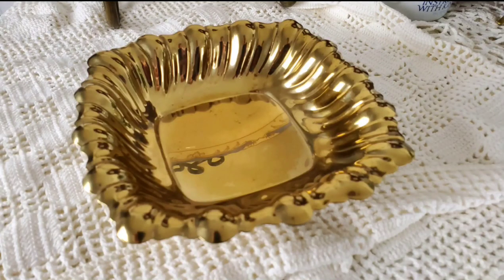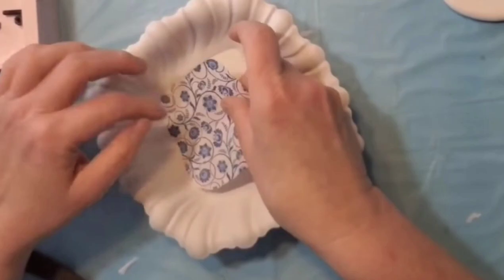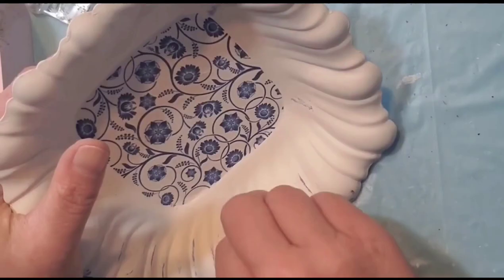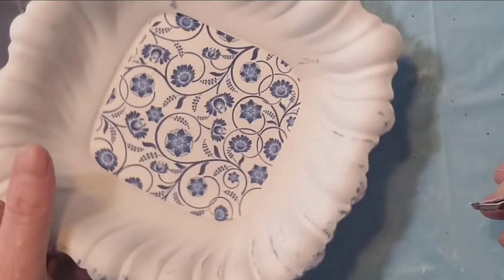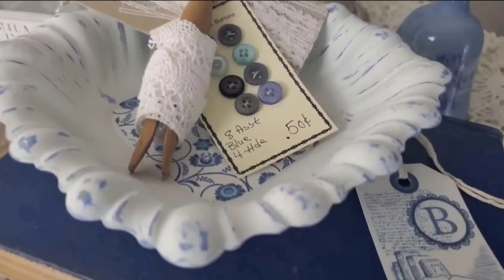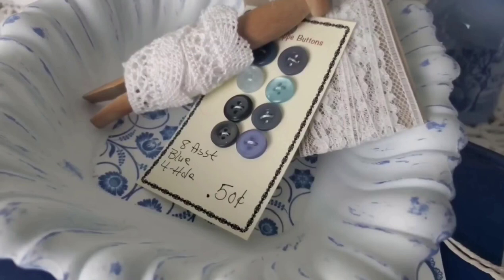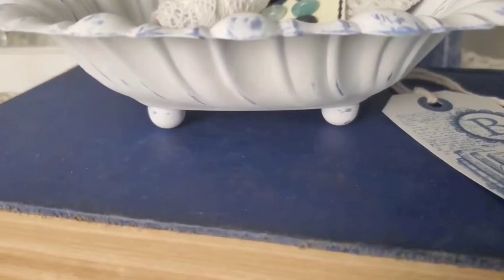Took this thrifted dish and painted it with that very rich dark blue that you see there, and it was just a little too much. So I went over it with a coat of chalk paint, and then I wet distressed it back to show up some of that blue and applied some printed rice paper on with Mod Podge.